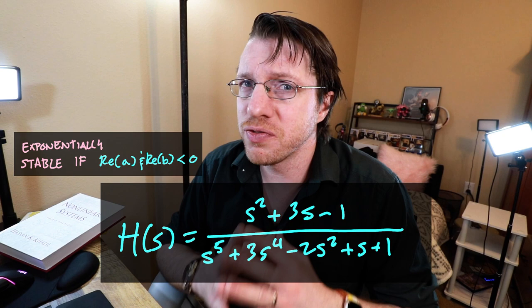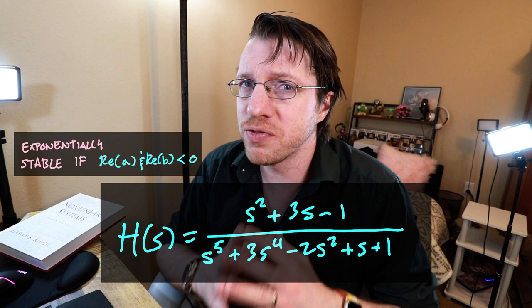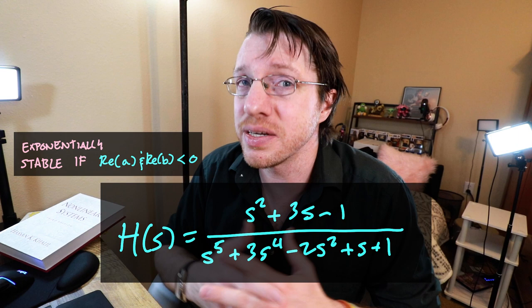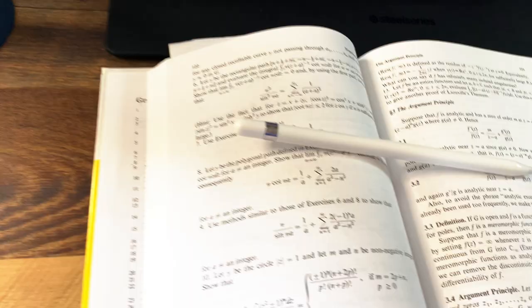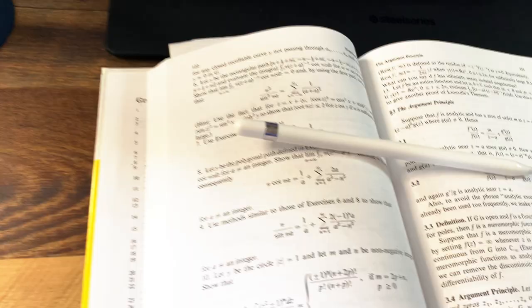However, factoring that denominator is fairly difficult, and this becomes even more complicated if you have a transfer function that isn't rational. Nyquist, at Bell Laboratories, determined a neat trick using complex analysis to figure out if you have any poles on the right half of the complex plane. This involves wrapping a contour around the entire right half plane and using some basic complex analysis.